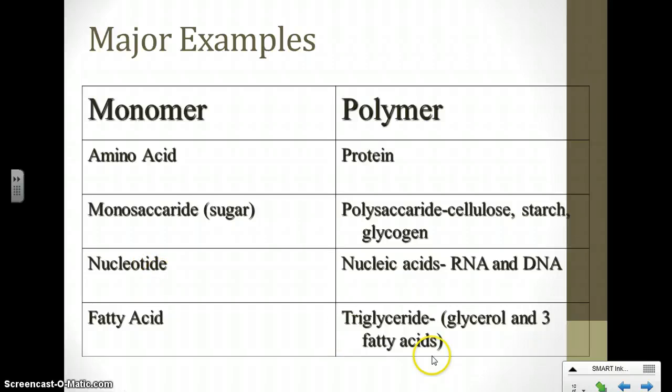And finally, our lipids, our fourth macromolecule, those have smaller subunits or smaller monomers called fatty acids that can come together to make that lipid. For an example, a triglyceride, which is a glycerol backbone with three fatty acid monomers coming together.